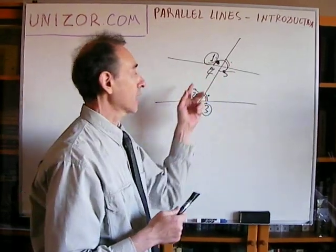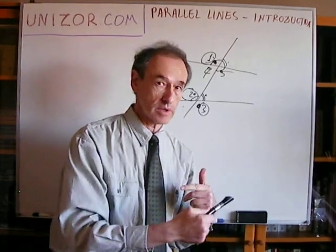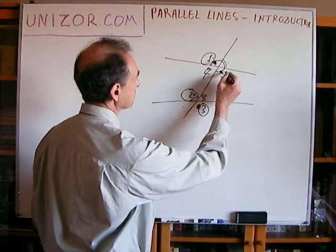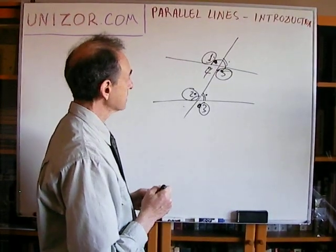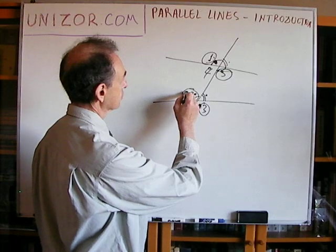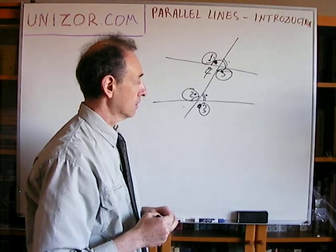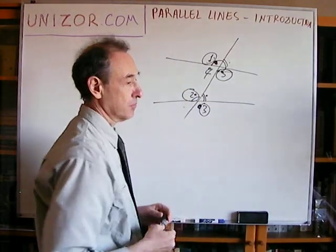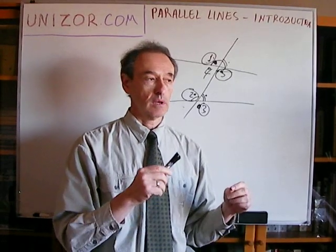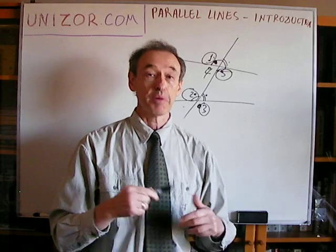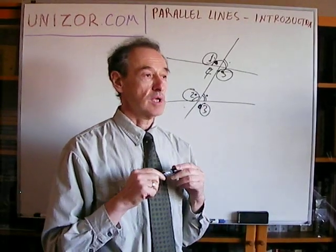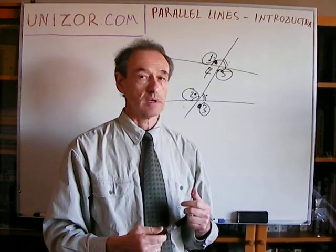Not only the congruence of corresponding angles is this type of characteristic property. Also, the congruence of alternate interior angles — for example, two and five — is the same type of property. Another example: angles two and four, which are one-sided interior, being supplemental to each other, making a sum of 180 degrees. There are a few conditions between these angles, and each of them can serve as a characteristic property of the parallelism of the lines.